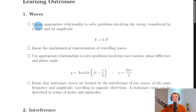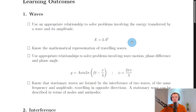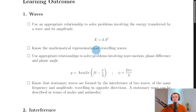For the first subtopic, waves, you need to be able to use an appropriate relationship to solve problems involving the energy transferred by a wave and its amplitude. We have the energy E equals KA squared, where K is a constant and A is the amplitude. You can also form an equation in terms of variables one and two: rearranging gives E divided by A squared equals K, so E1 divided by A1 squared equals E2 divided by A2 squared.